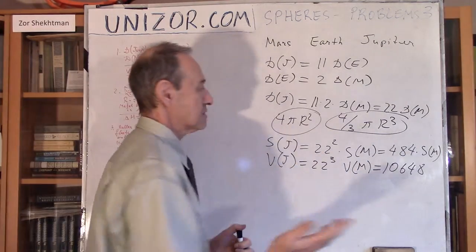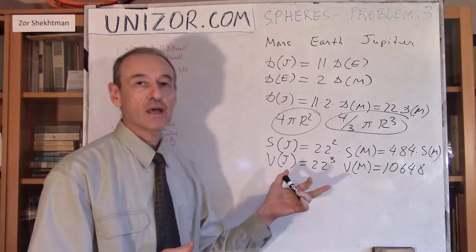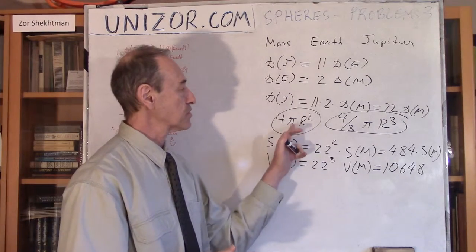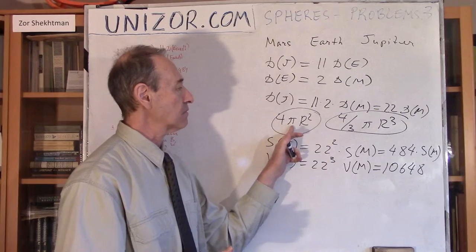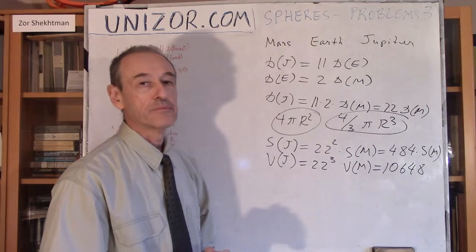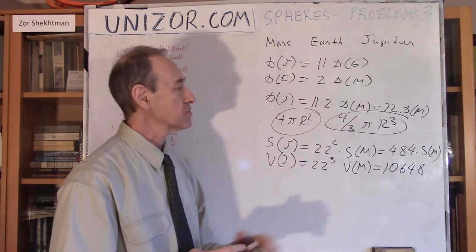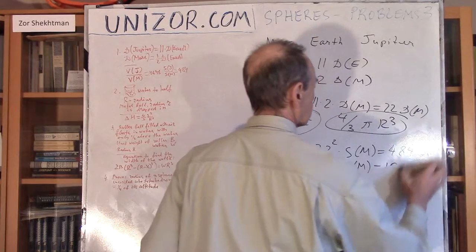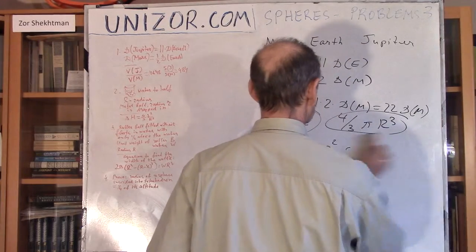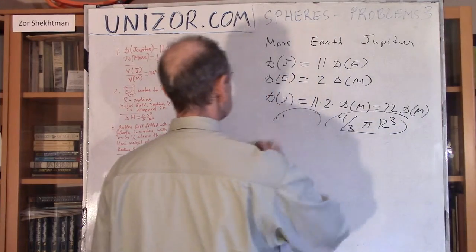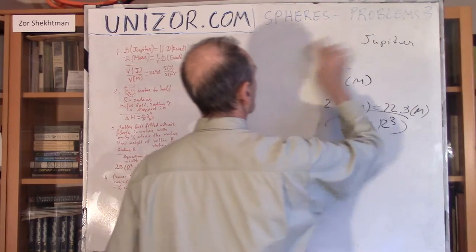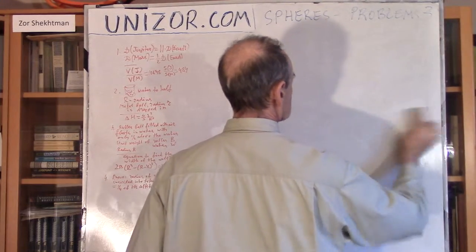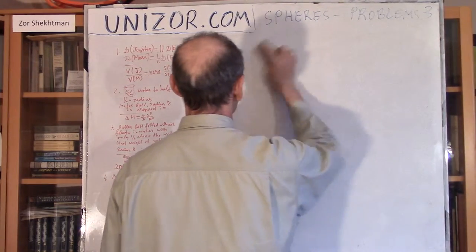Anyway, it was just an exercise: the surface area of the sphere is proportional to the square of the radius, and the volume is proportional to the third degree — the cube — of the radius. Simple. All other problems are as simple as this one.